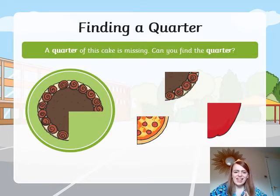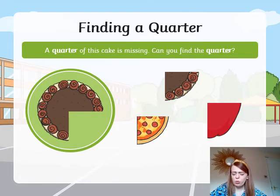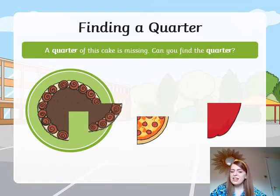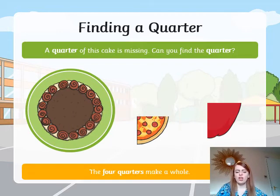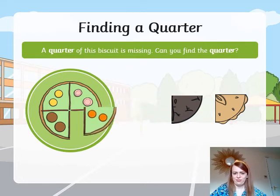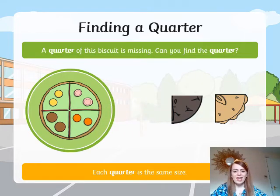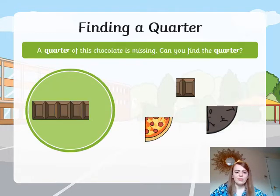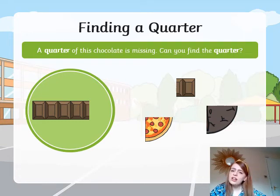So let's have a look at finding a quarter. A quarter of this cake is missing — can we find a quarter? Here it is — here is the missing quarter. The four quarters make a whole cake. A quarter of this biscuit is missing — can we find a quarter? There we go, and now we have a whole cookie and each of these quarters is the same size. A quarter of the chocolate is missing — can you find a quarter? Because we're not always looking at circles; we can find quarters of rectangles and other shapes as well.